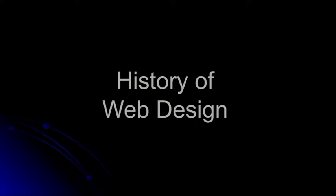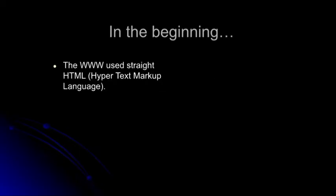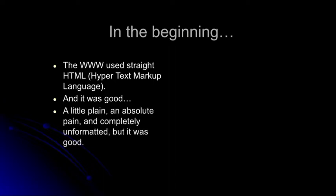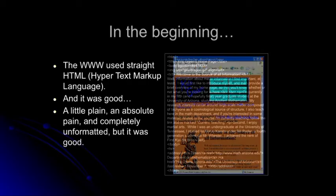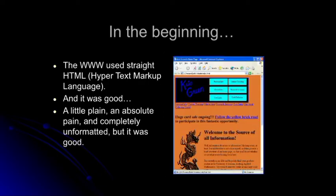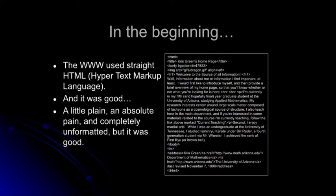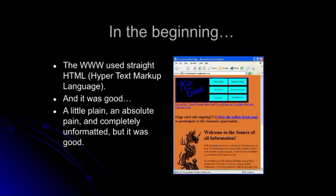Now let's look at the history of web design. In the beginning, it was straight HTML and it was good — people enjoyed it, it was plain. And when you have something like this, there are codes written under what you can see. This is the code that created what you see. Whatever is written in the code is what created what you can see on screen. This was the beginning and it was good.